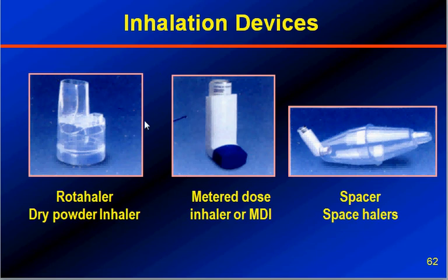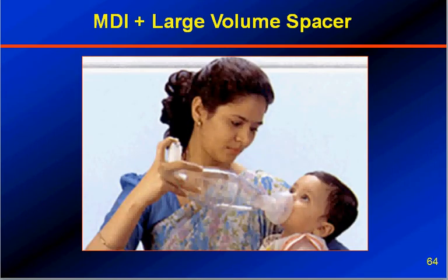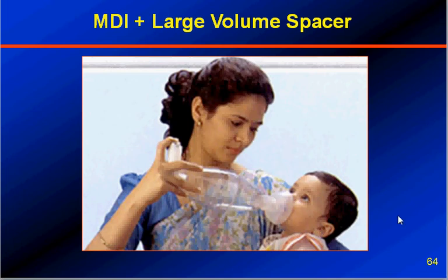This is the rotahaler or dry powder inhaler. The MDI — metered-dose inhaler. Among spacers, there are two types: a large volume spacer, and a small volume spacer called the zerostat. MDI plus large volume spacer is the ideal choice for very young children, with a good-fitting face mask. It is convenient for mothers to administer the drug — the child takes tidal breaths at normal speed, and a valve holds the inhaled medicine in the chamber, which is then taken in by the young infant.